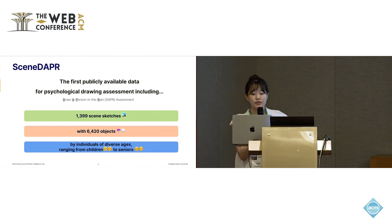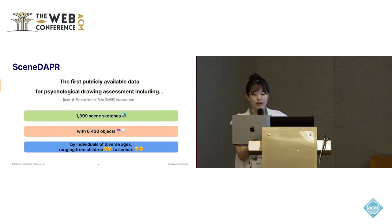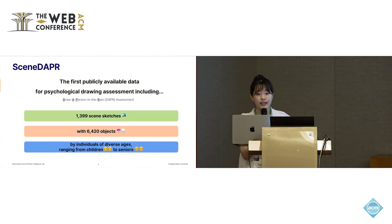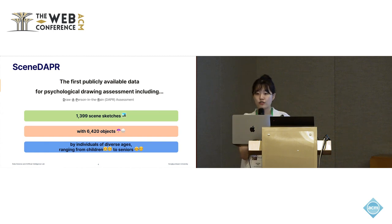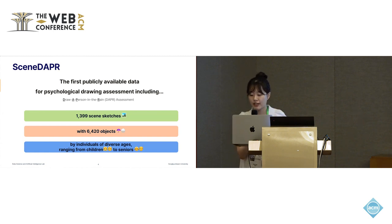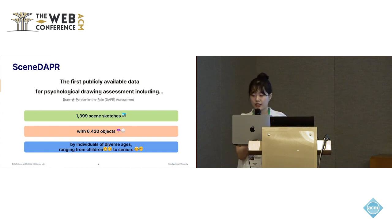To develop a deep learning model for addressing these challenges, high-quality datasets need to be available as a foundation. Therefore, we propose a new Scene-Level Freehand Drawing Dataset called CND-APL, specifically designed for analyzing psychological drawing assessments. Unlike previous datasets biased toward adults, our dataset is the first with age diversity ranging from children to seniors, and provides about 1.4 thousand scene-level sketches with segmentation labels and sequential information.